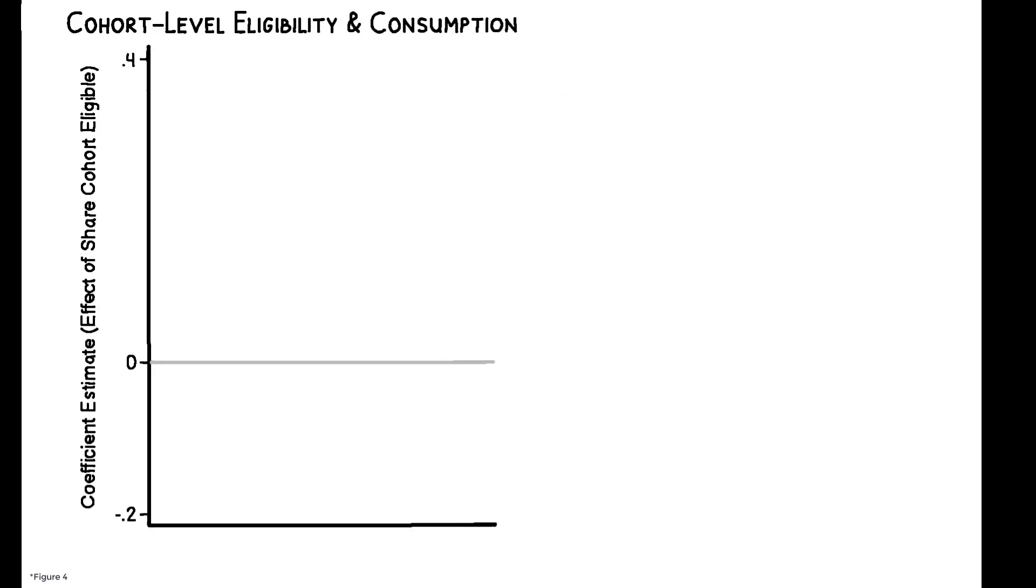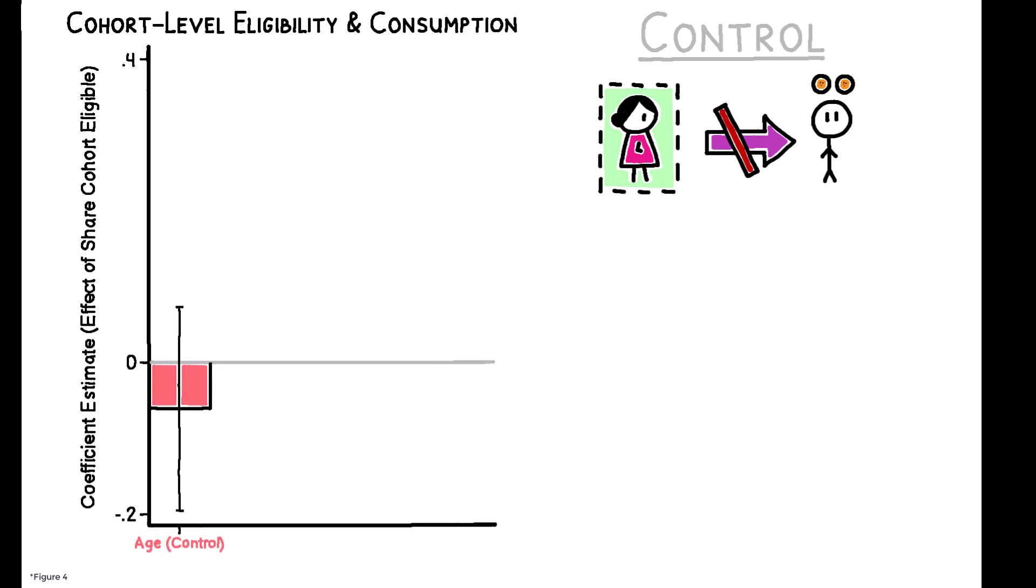This figure summarizes the results. In the control group, there is no relationship between cohort-level eligibility and consumption in either age- or kin-based societies. This makes sense, as no cash was actually transferred in the control group.